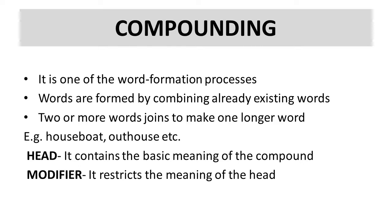Compound words are basically formed by two elements. As we discuss the types of compounds, we will see that in some types both elements are present while in other types only one element is present. These two elements are the head and the modifier. The head contains the basic meaning of the compound, while the modifier restricts and modifies that meaning.